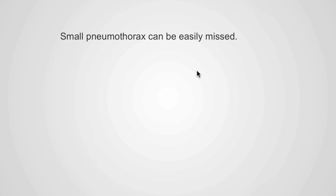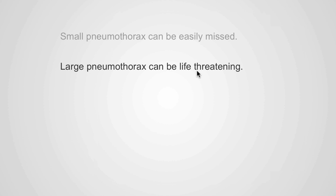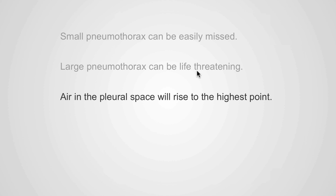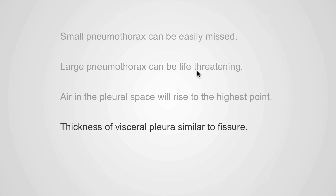In summary, a small pneumothorax can be easily missed, and a large pneumothorax can be life-threatening. Air in the pleural space will rise to the highest point. The thickness of the visceral pleura is similar to the thickness of the fissures.